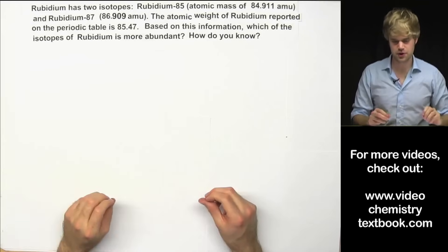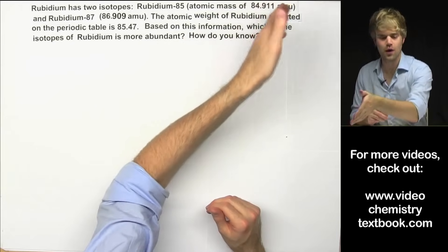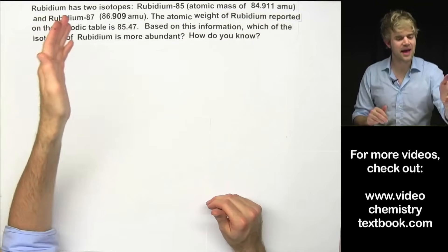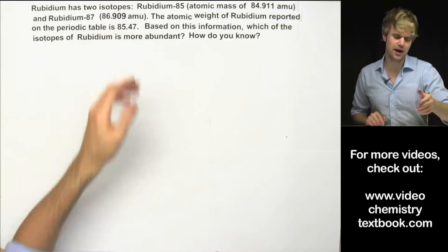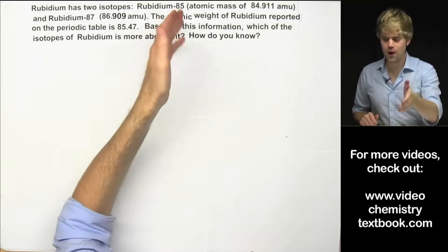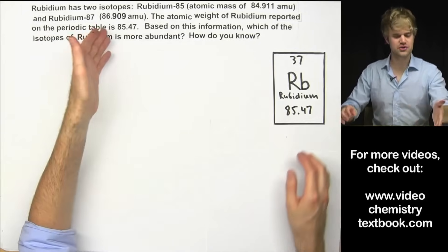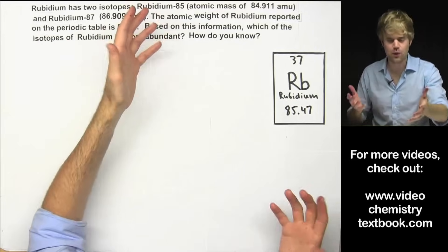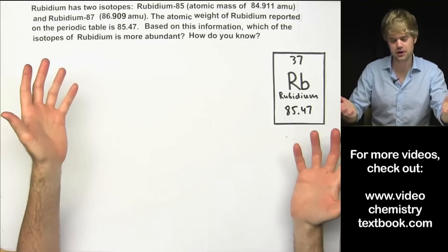Rubidium has two isotopes: rubidium-85 with an atomic mass of 84.911 amu and rubidium-87 with an atomic mass of 86.909 amu. The atomic weight of rubidium reported on the periodic table is 85.47, and in this question when they say atomic weight they mean atomic mass, relative atomic mass, any of these terms you can use interchangeably.